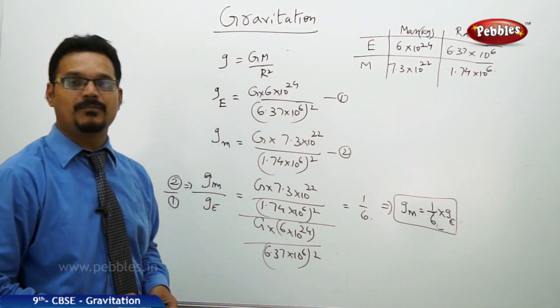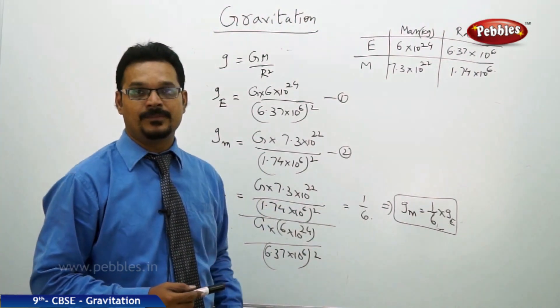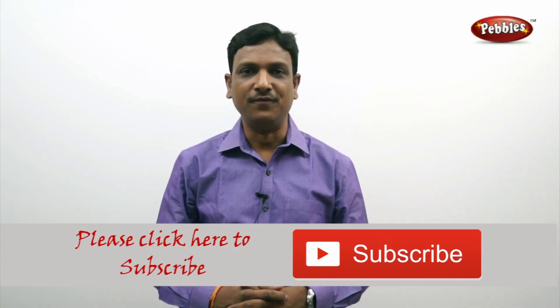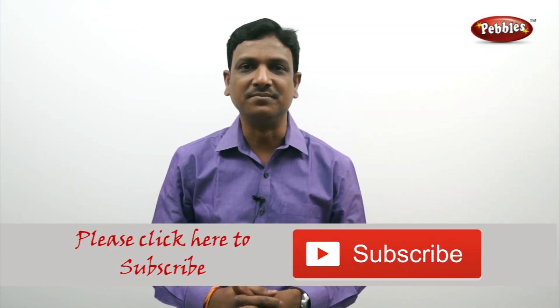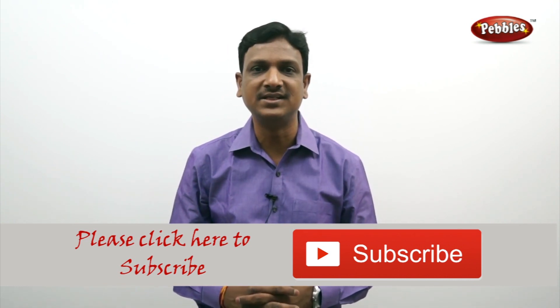So this implies g of moon equal to 1 by 6 times of g of Earth. That's why we found that the weight of any body on the moon is decreased. If you like this video, please give a thumbs up. Please subscribe to our channel to get more videos on CBSE syllabus.